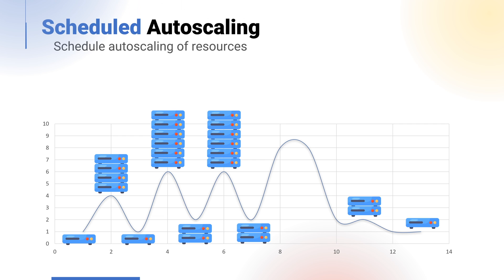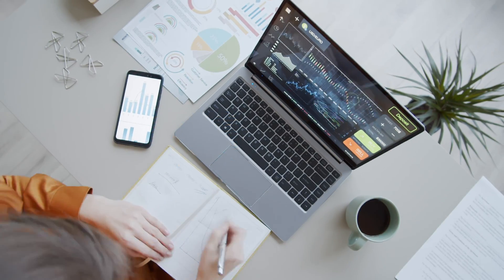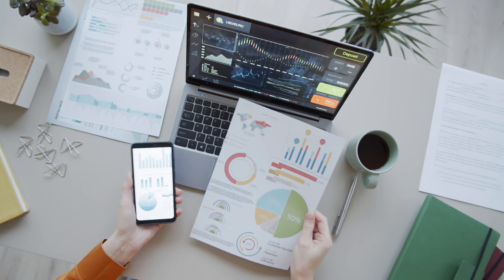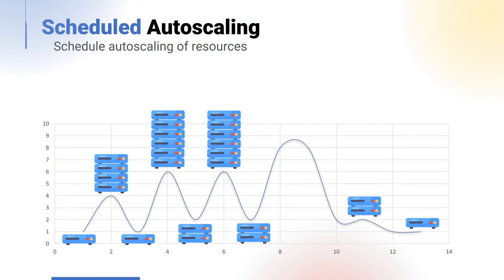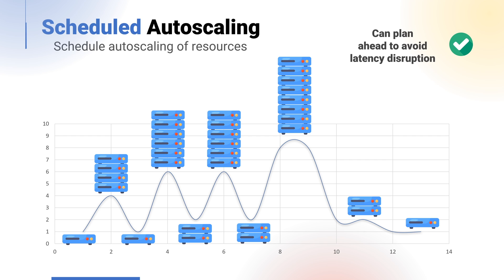Another variation is scheduled autoscaling. In some organizations, especially those associated with financial services, specific dates in the year may be targeted for scheduled autoscaling. A good example could be end-of-month batch processing, where an organization knows that its workload is going to increase exponentially at specific dates and times. For example, knowing that there's a peak in workload at around 9am, we could schedule autoscaling ahead of time, then keep the rest of our timeframes as reactive.